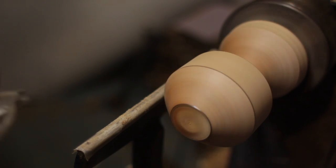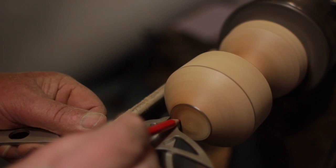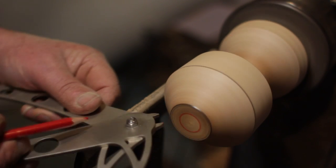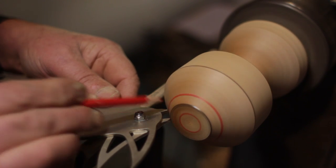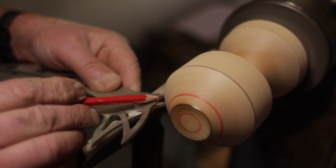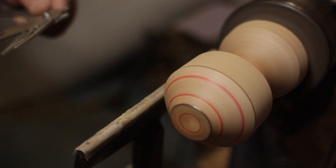Now taking the caliper still set at the diameter of the sphere, we use the ears to mark a distance from the black line either side of the black line. The red pencil will help define which marks we're working with as we progress.